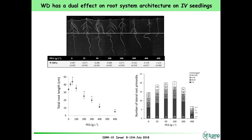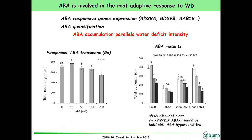We did the same for lateral roots. Looking at the primary root length produced after treatment, you see a repression of root development — significant but not so important for mild water stress, but very dramatic for more severe stress. However, looking at lateral roots, you do not see repression but rather a stimulation of root growth. The lateral root growth is stimulated by mild water stress and then repressed by more severe water stress.